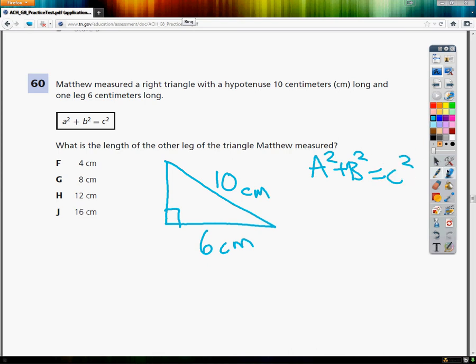Now from here, my next step is always to touch that right angle. I'm going to put my finger right there. The two sides that make up that right angle are a and b. So in this case, my x and my 6 are my a and b.